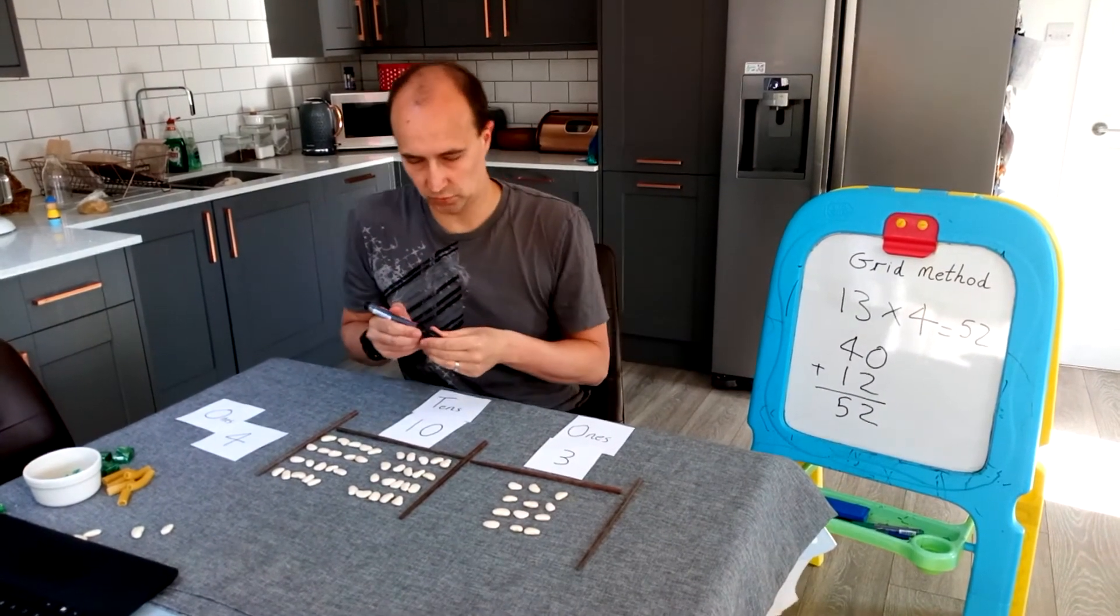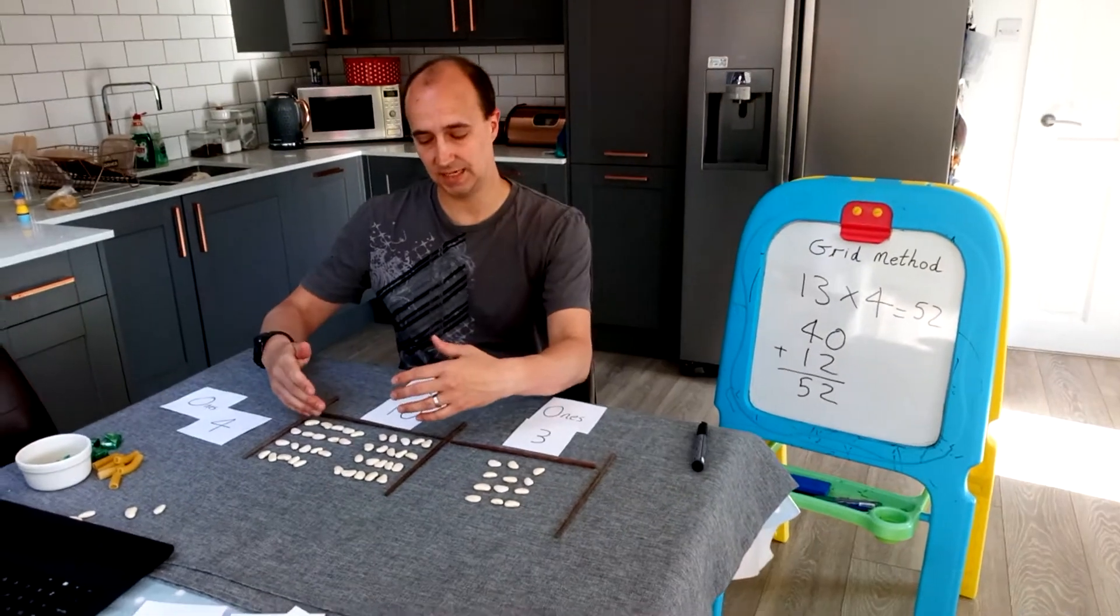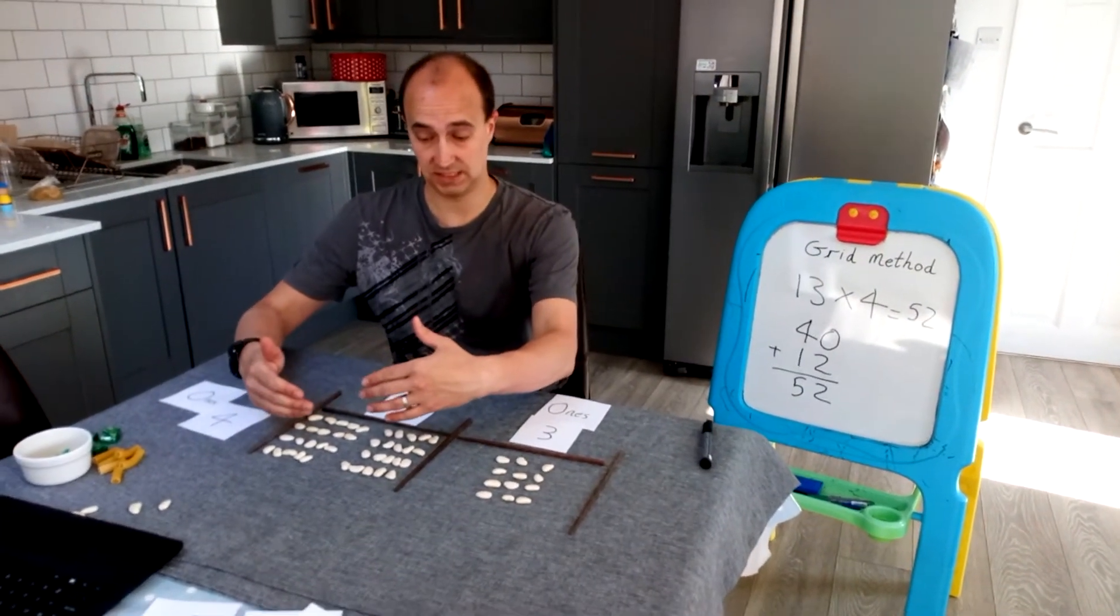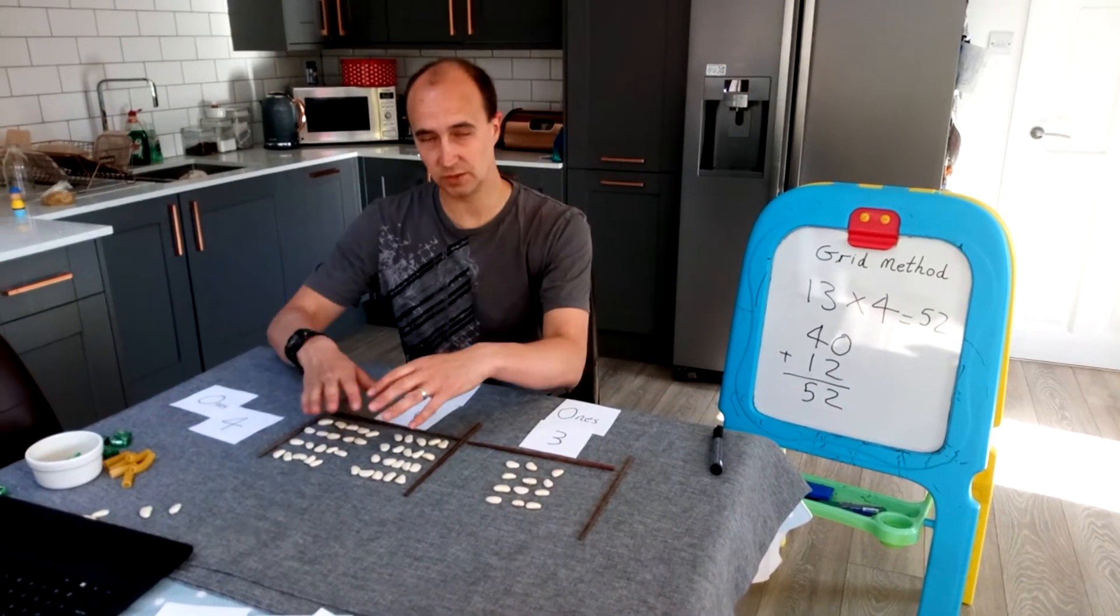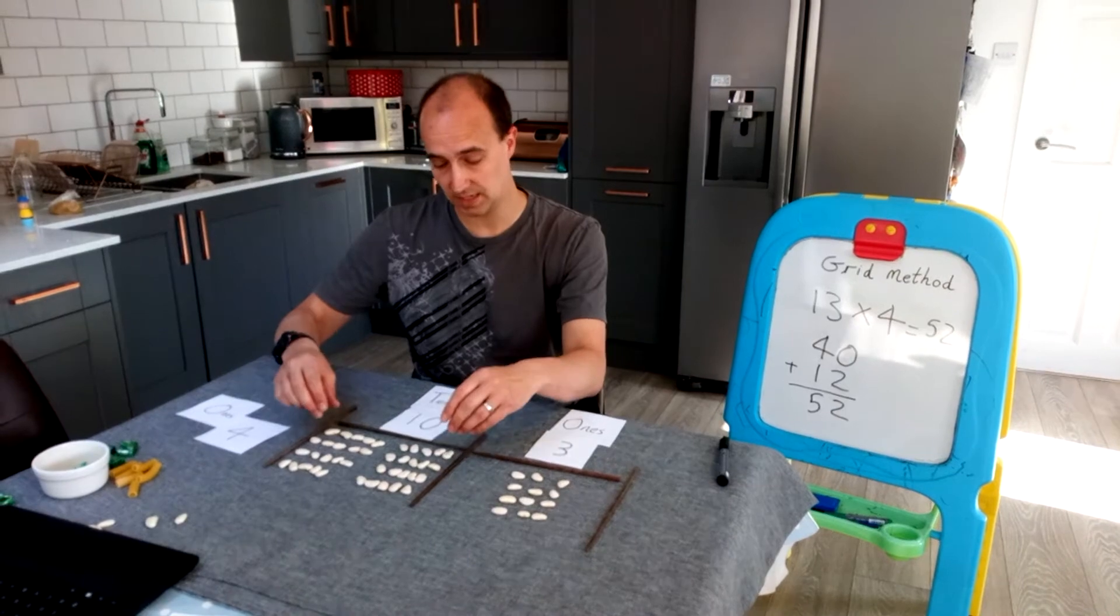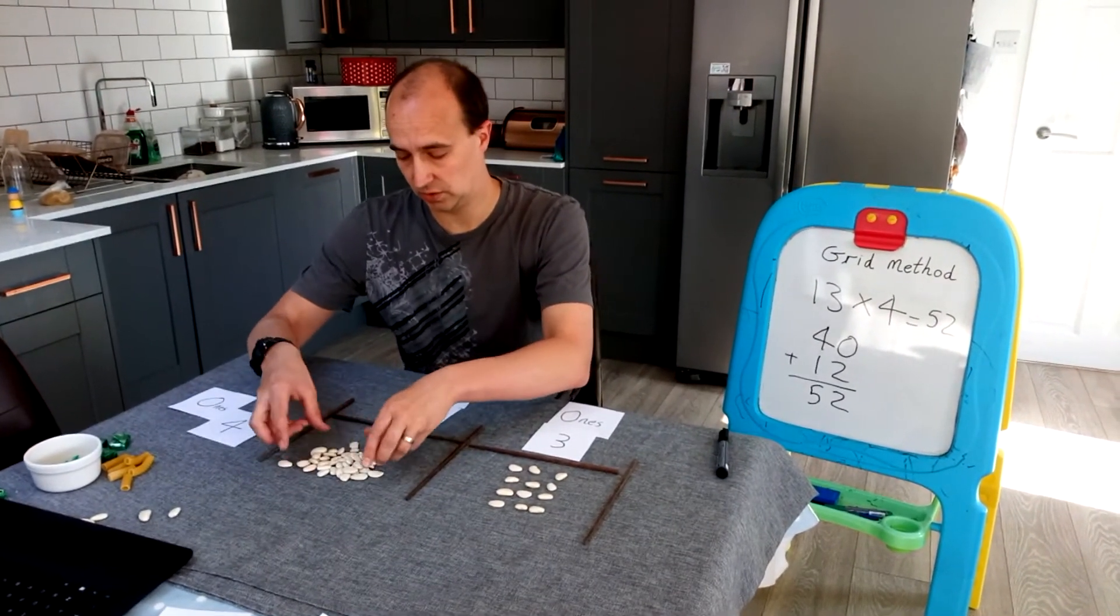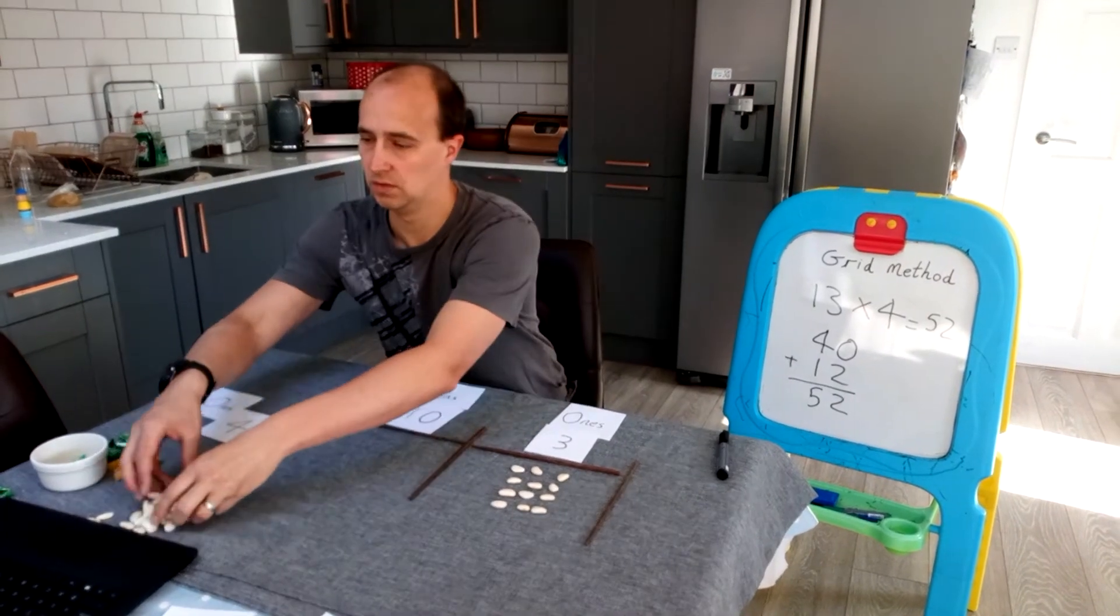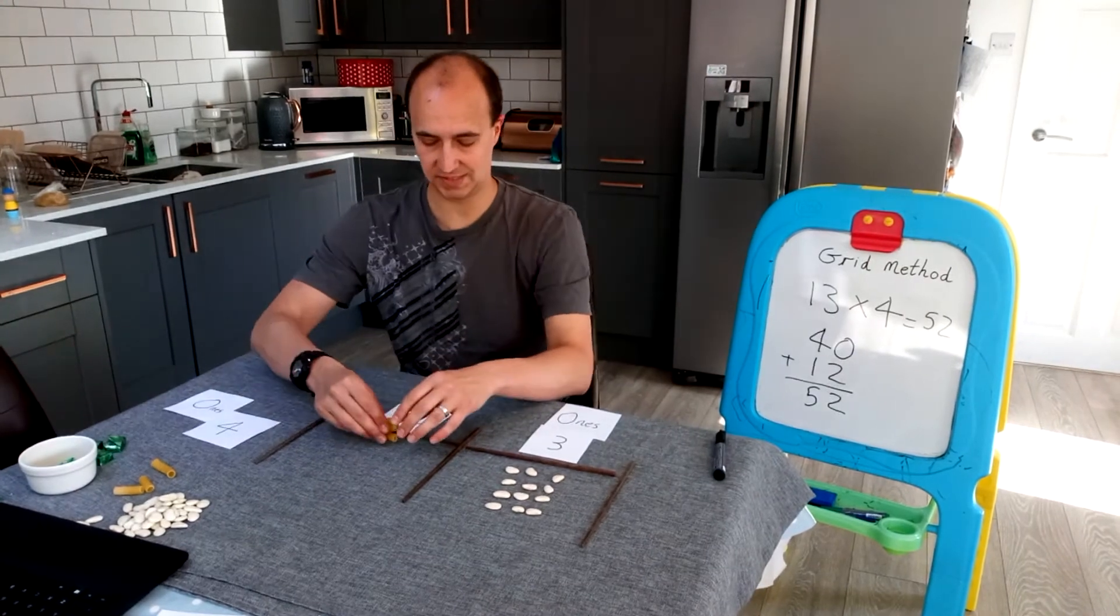Now, what the children will soon move on to is that they'll soon move on to understanding that these are easier to count in 10s rather than lots of different ones. You can see there's lots of beans, and they can easily make mistakes with the amount of beans that there are there. And also, it takes a lot of time. So the children will soon move on to something that we call base 10, but it's just using objects to represent 10.